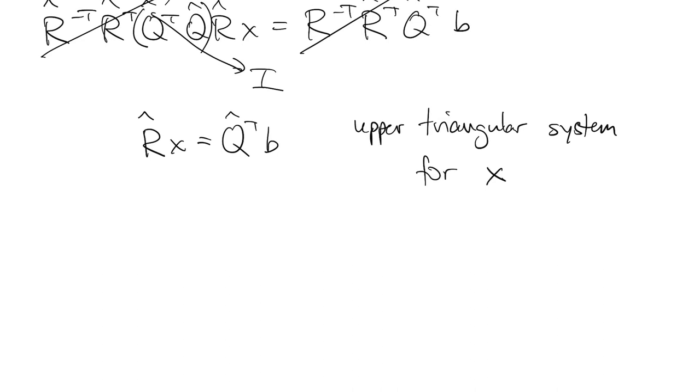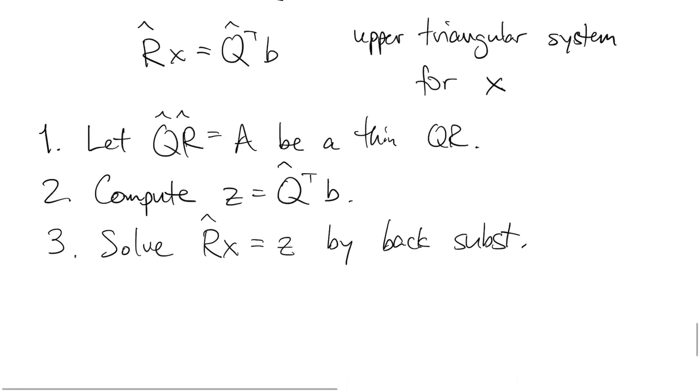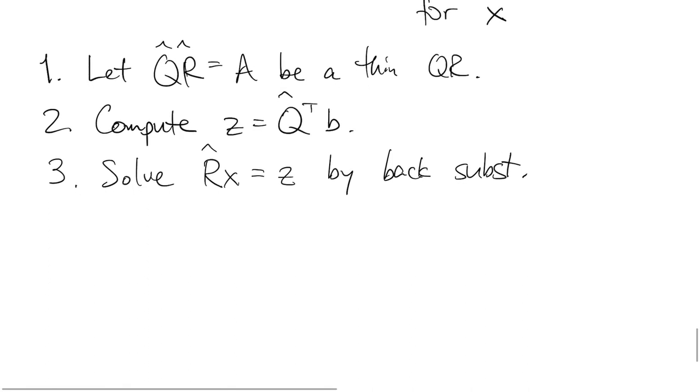So that leads us to an algorithm. First, we find the QR factorization of A, thin QR factorization. Then we compute this vector, Q hat transpose times b. And we solve an upper triangular linear system by back substitution. Now all that does require R hat to be non-singular, which is the same thing as saying that the rank of A is equal to n.